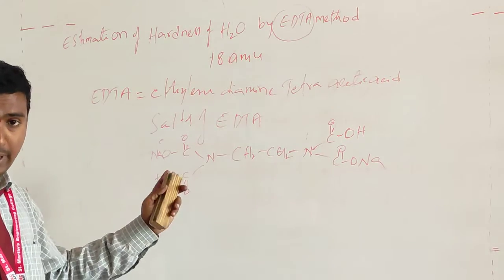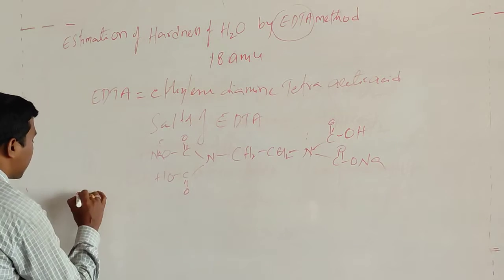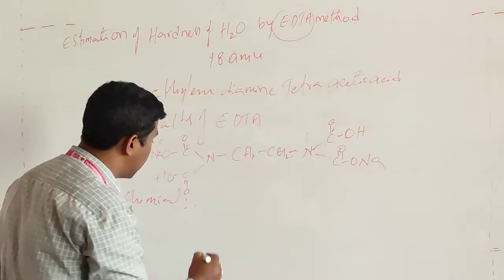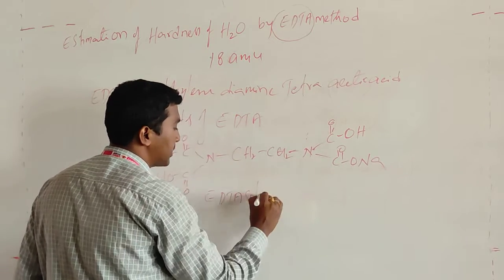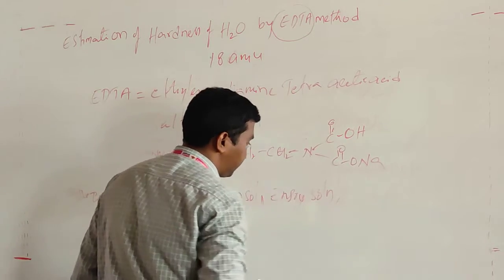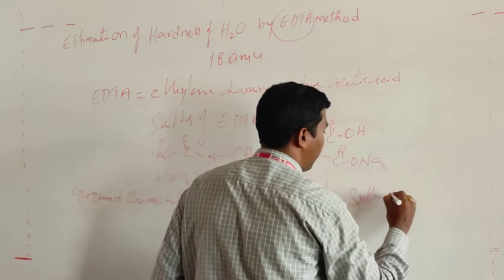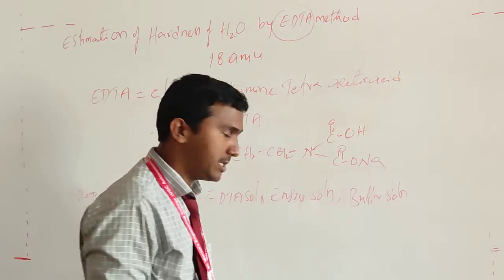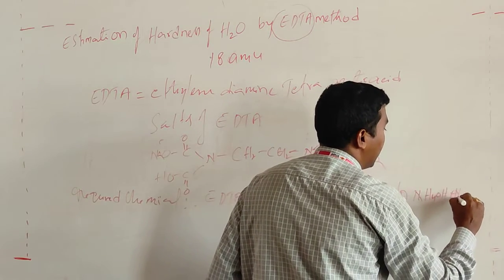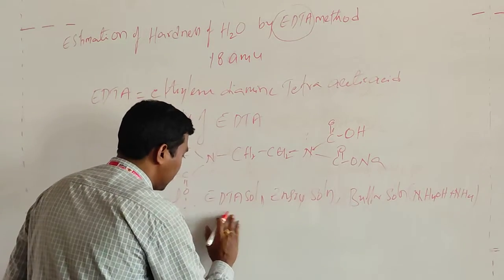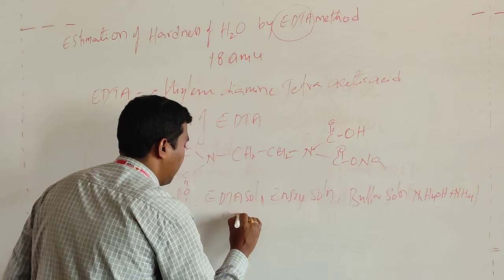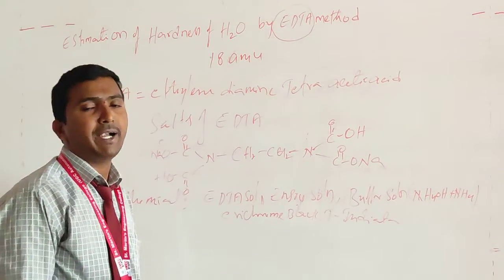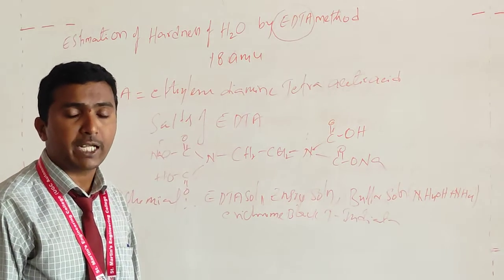What are the required chemicals for the estimation? The required chemicals are: EDTA solution, zinc sulfate solution, buffer solution — which is a mixture of ammonium hydroxide and ammonium chloride — and Eriochrome Black T indicator.